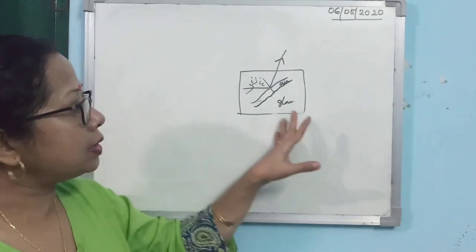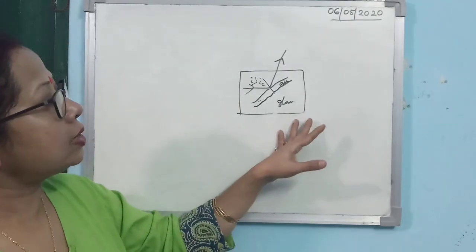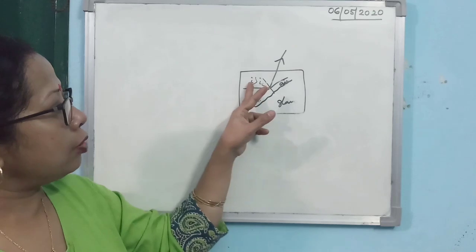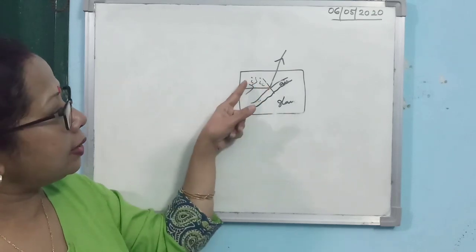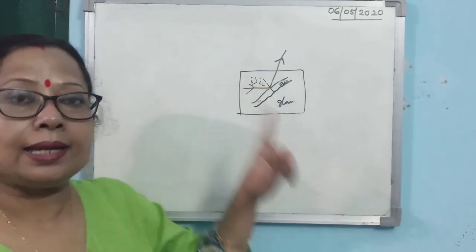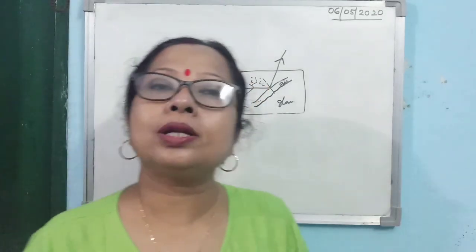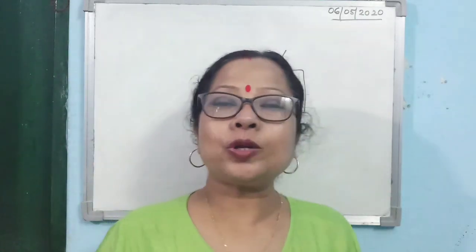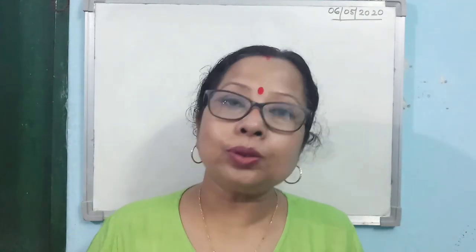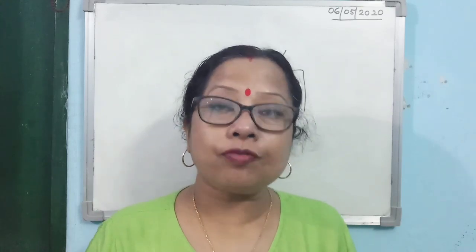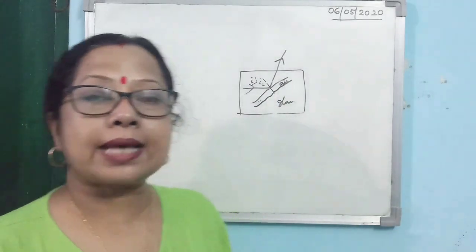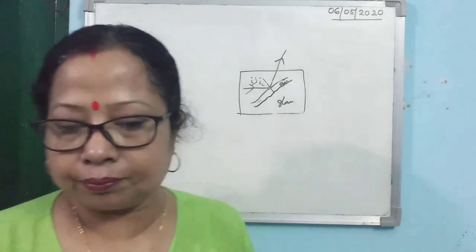To write the answer for the third consequence, draw the diagram showing glass and air inside the crack, mark that i is greater than ic, and write the statement: it happens due to total internal reflection at the glass-air interface, as shown in the diagram.